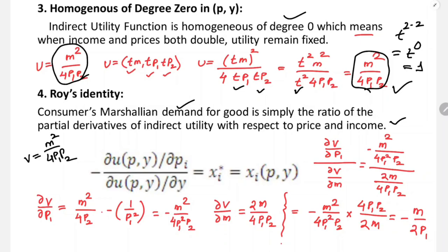Taking the derivative of V with respect to p1: V = M²/(4·p2) · (1/p1). The derivative of 1/p1 with respect to p1 is -p1^(-2) = -1/p1². So ∂V/∂p1 = -M² / (4·p1²·p2).